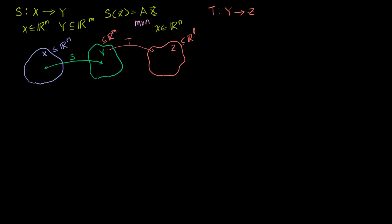So what is the matrix representation of T going to be? We know it's a linear transformation, so T of x, where x is a member of Rᵐ, equals some matrix B times x. Since x is in Rᵐ, B must have m columns, and since it maps into Rˡ, B is going to be an l by m matrix.